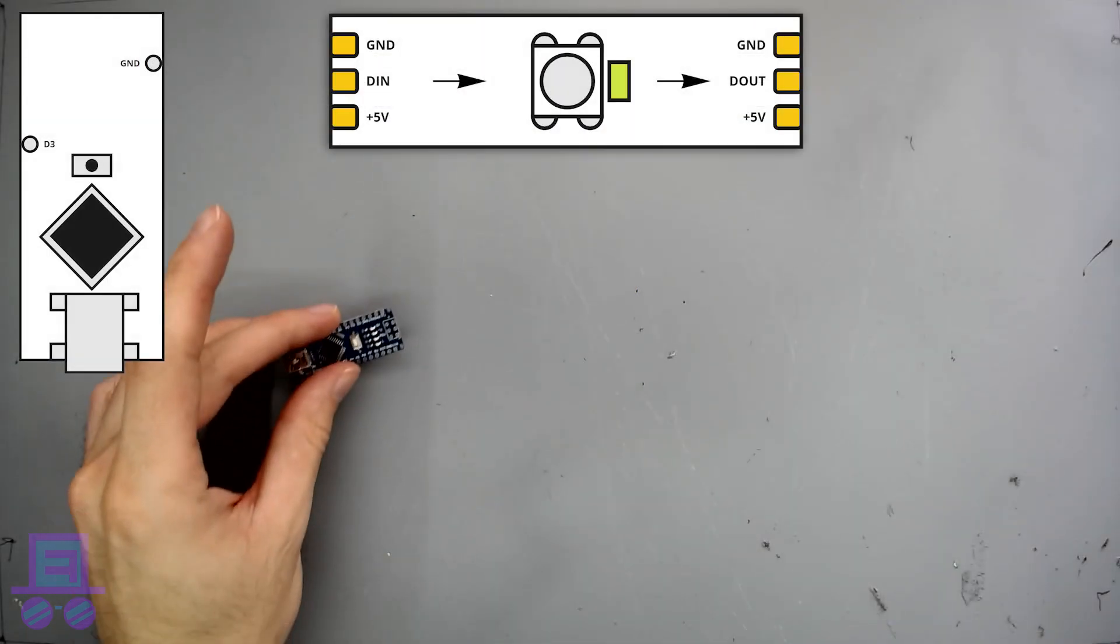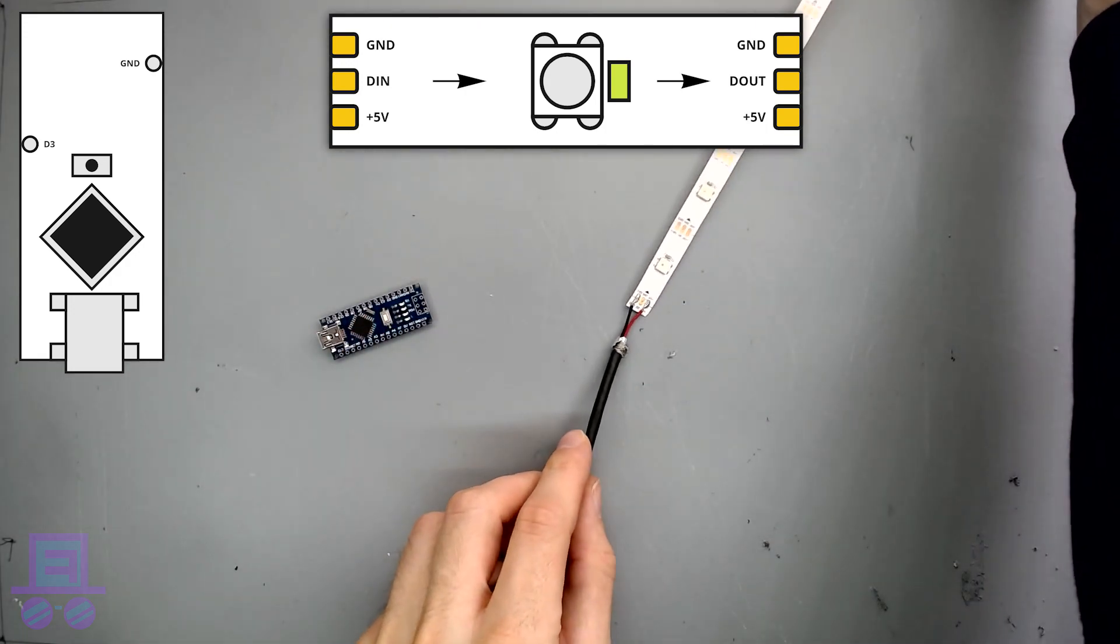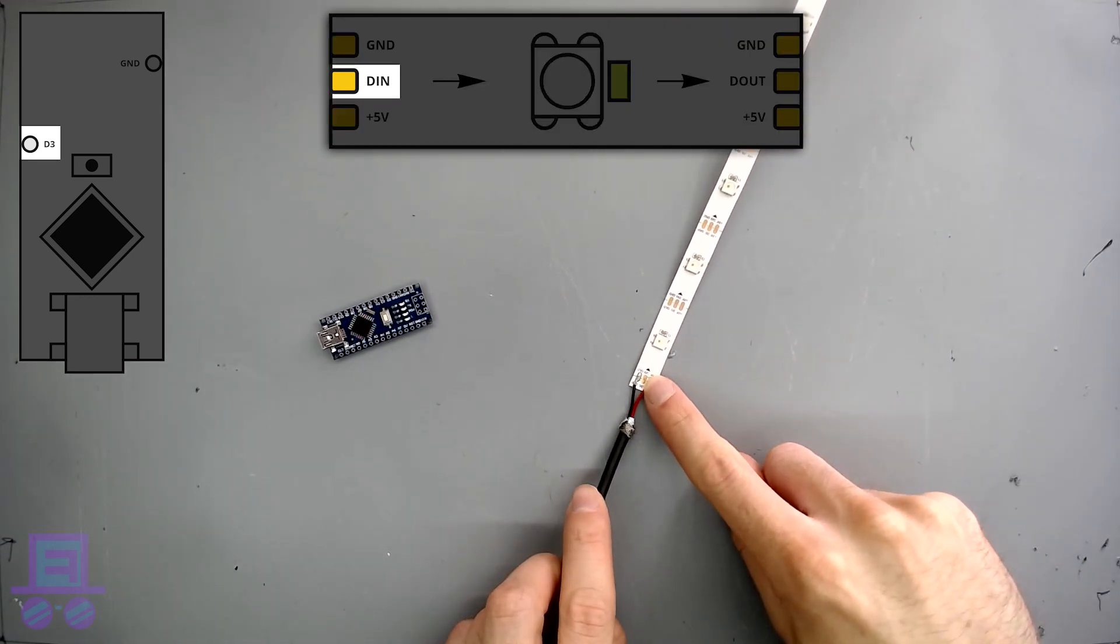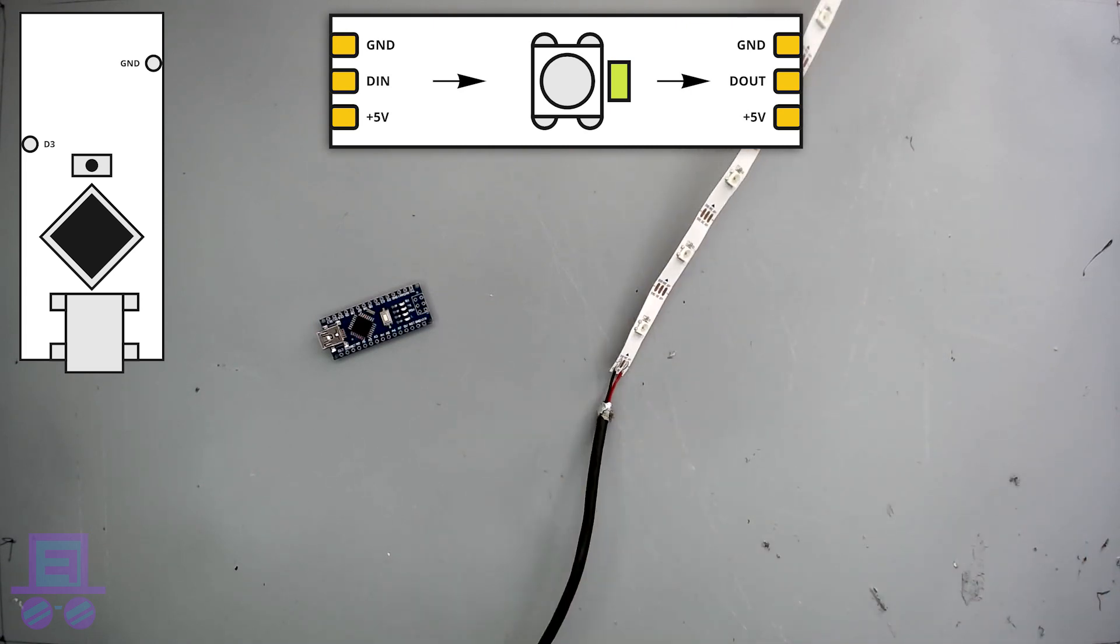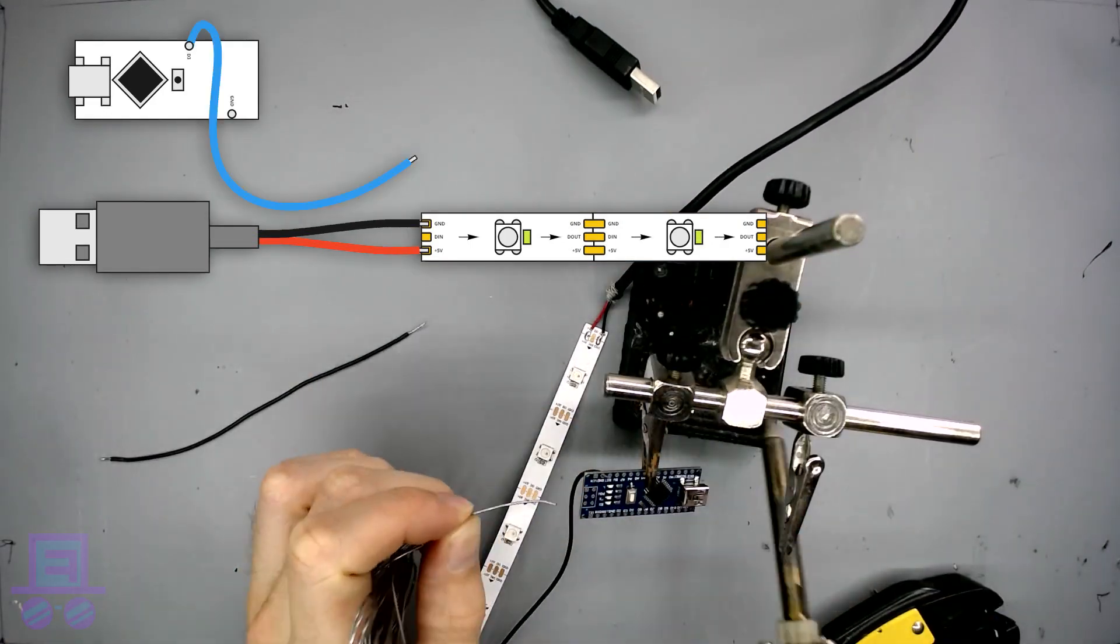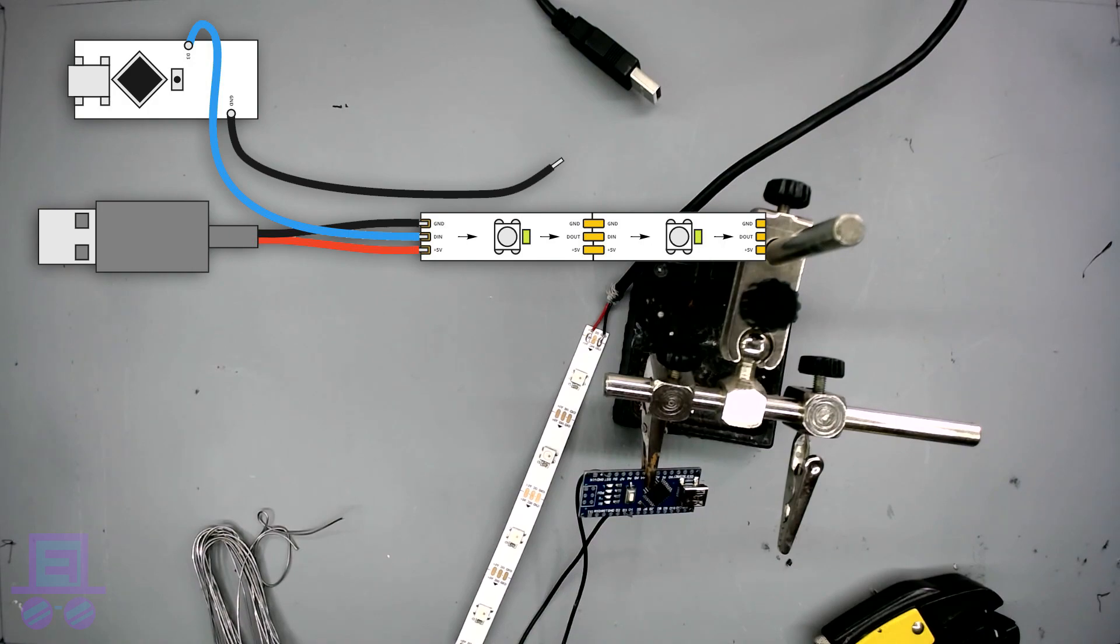Now the way we'll use this to control our LEDs is by sending a signal from one of the Arduino's digital output pins to the first data in pin on our strip. That LED will receive the signal and pass it on to the next using its data out pad. To do this, solder the Arduino's D3 pin to the first DIN pad and the GND pin to any GND pad.